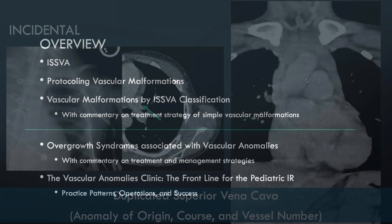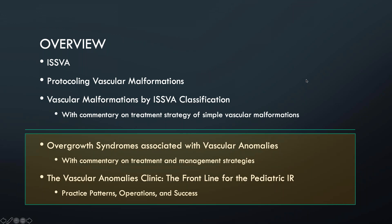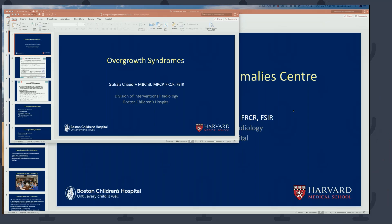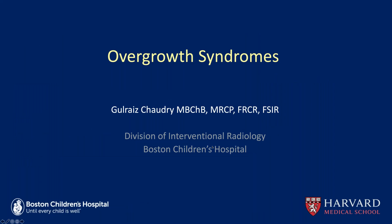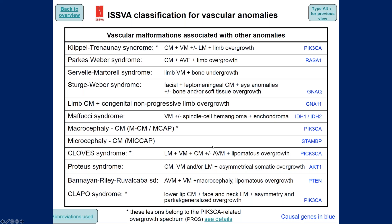Shifting to the second part of our talk, I'll give Dr. Chaudhary the helm to discuss overgrowth syndromes associated with vascular anomalies. Dr. Chaudhary will briefly review overgrowth syndromes, imaging characteristics, and interventional treatment. At the back end of the ISSVA classification are vascular malformations associated with other anomalies — a wide spectrum of conditions. We'll concentrate on the most common ones, predominantly KTS and CLOVES, along with Parkes-Weber, PTEN, and Proteus syndrome.